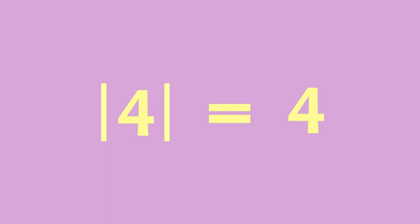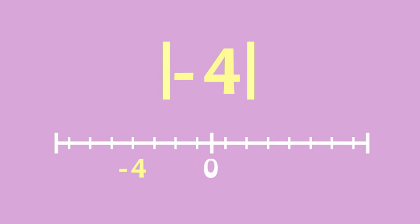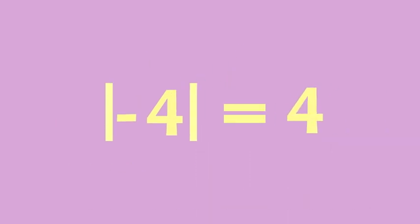The notation for absolute value is two straight lines, like this. The absolute value of four is four, because four is four places from zero on the number line. Negative four is also four places from zero on the number line, so its absolute value is also four.